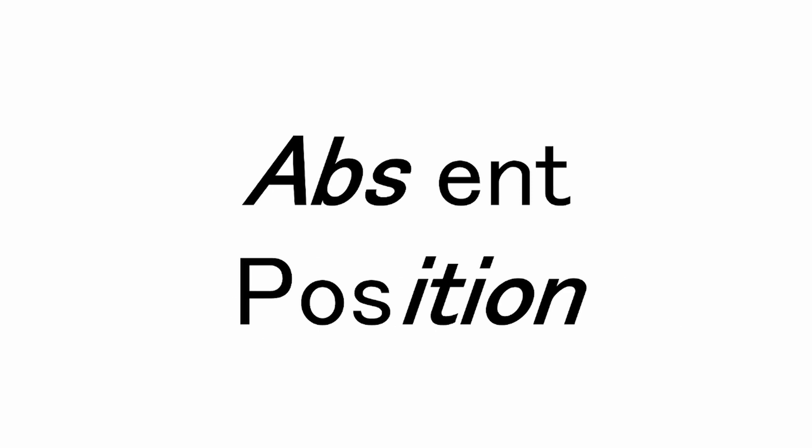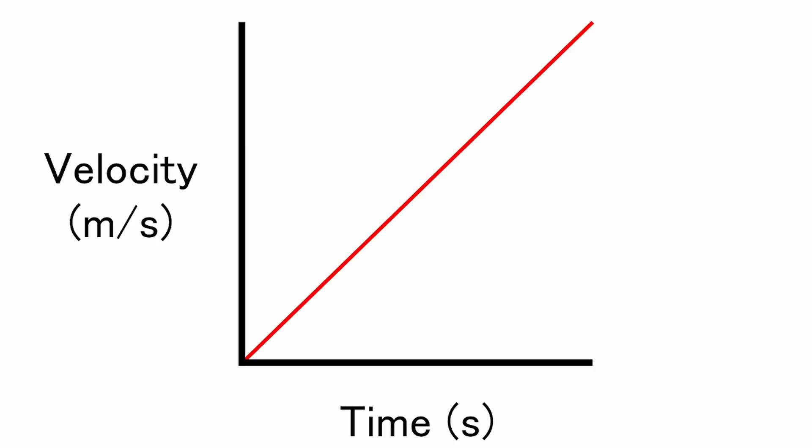And wow, was I wrong. This is a real thing. So let's talk about that. The quantity that I had just derived is known as the absement or absition, their names being a combination of absence and displacement, or absence and position. The best way to think about this quantity is to look at a graph.